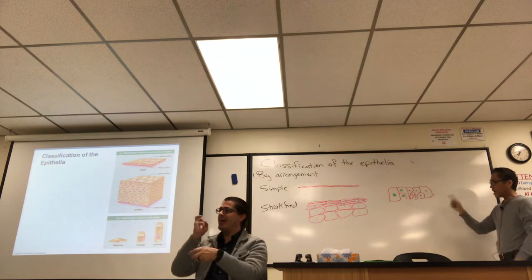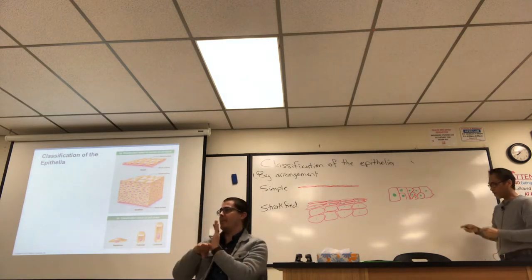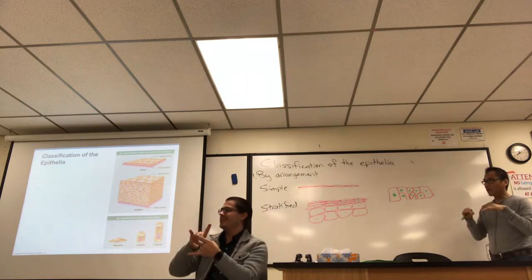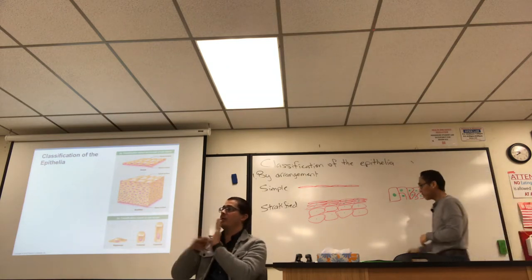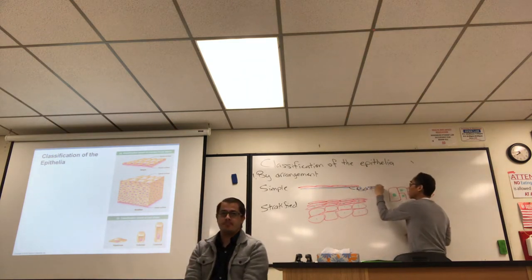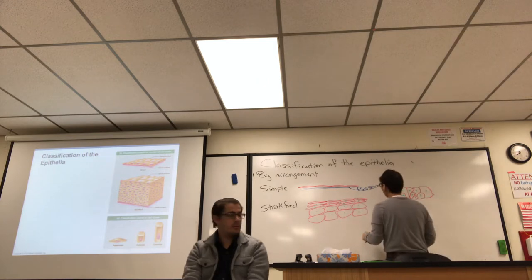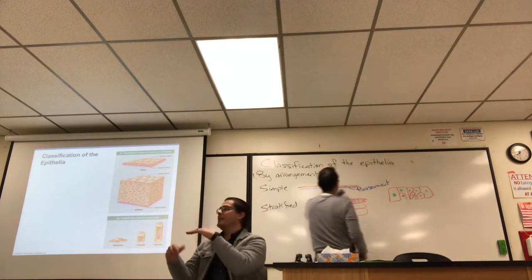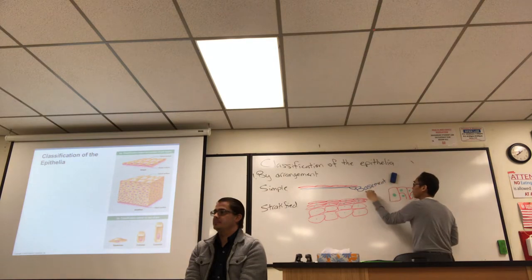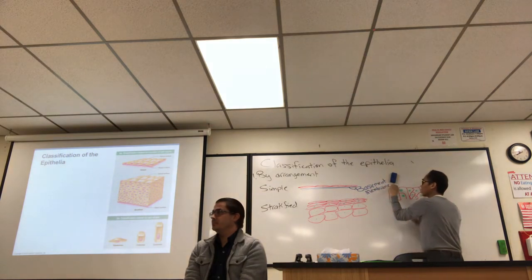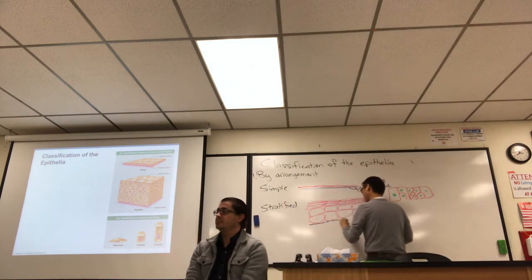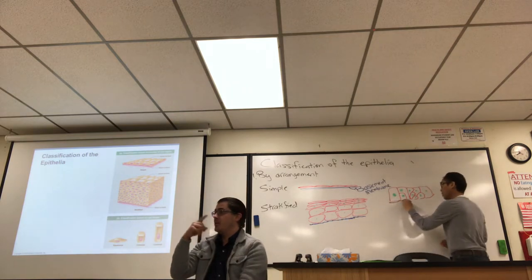What's difficult to see in pseudostratified tissue is that every cell is touching the bottom. All epithelia have a foundation: they always lie on a connective tissue layer called the basement membrane, which contains collagen fibers. Always draw the basement membrane underneath every epithelium.